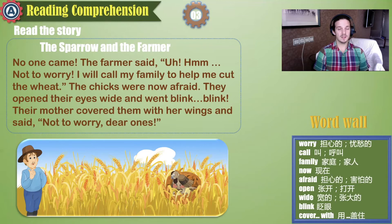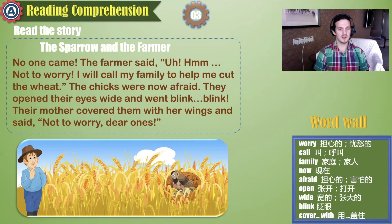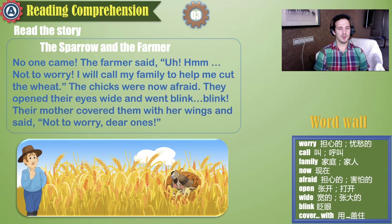Let's keep reading. New words: worry, call, family, now, afraid, open, wide, blink, cover. With no one came, the farmer said, not to worry, I will call my family to help me cut the wheat. The chicks were now afraid. They opened their eyes wide and went blink, blink. Their mother covered them with her wings and said, not to worry, dear ones.